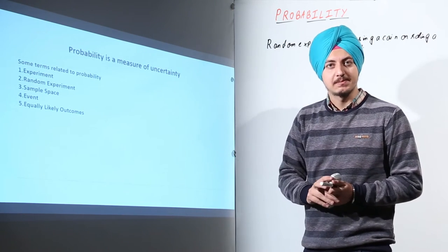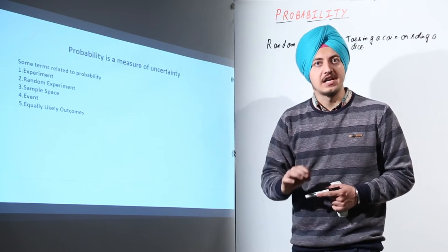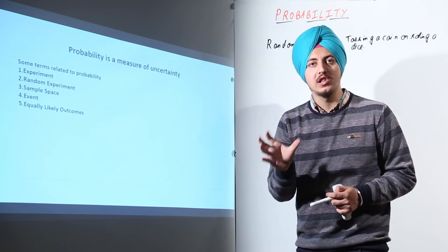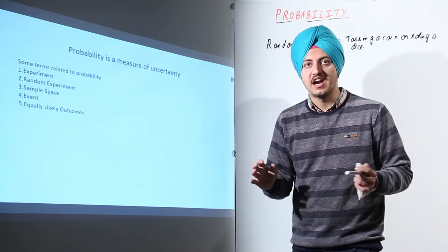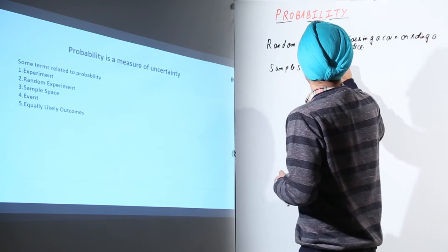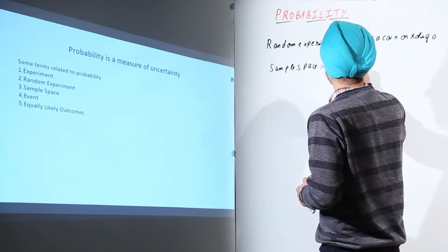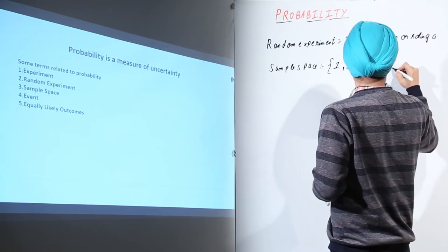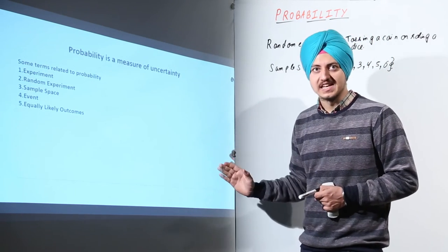The next term is sample space. Sample space includes all the outcomes that can occur in a random experiment. For example, what would be the sample space for rolling a dice? All that can occur is 1, 2, 3, 4, 5, or 6 — it can be anything between one to six. So in rolling a dice, the sample space is {1, 2, 3, 4, 5, 6}.